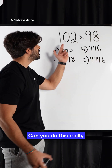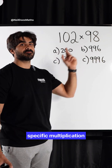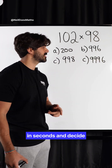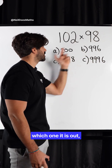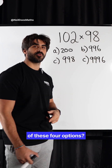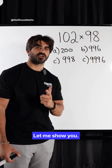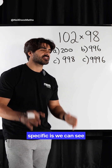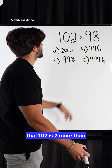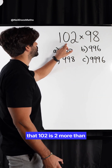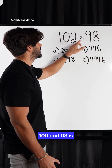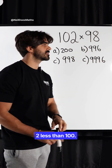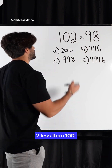Can you do this really specific multiplication in seconds and decide which one it is out of these four options? Now the reason it's so specific is we can see that 102 is 2 more than 100 and 98 is 2 less than 100.